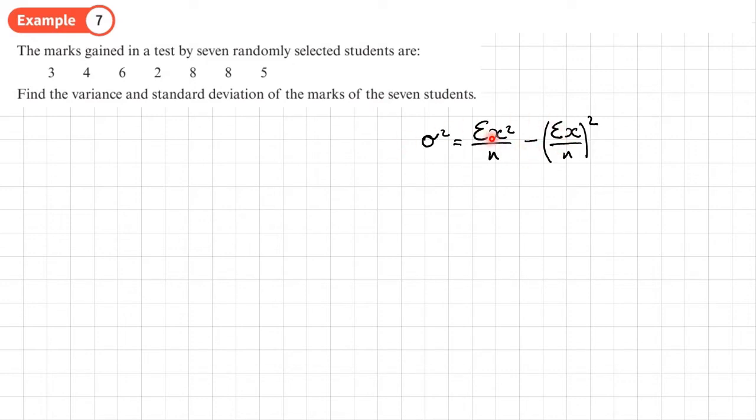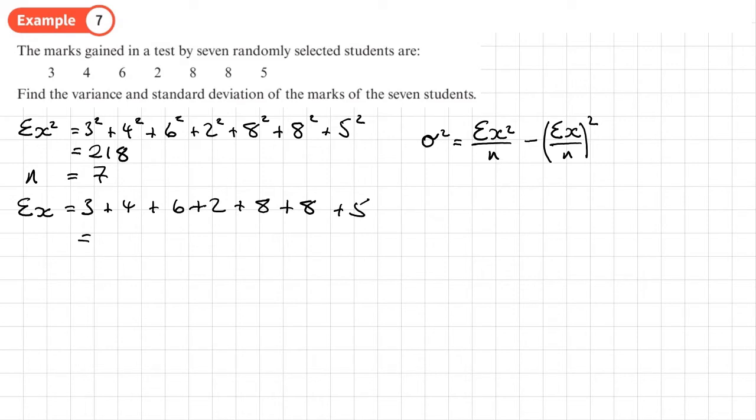Here's our formula. We need to work out different parts. The sum of the numbers squared is 3² + 4² + 6² + 2² + 8² + 8² + 5², which gives us 218. N is the number of values, 7 students, so n is 7. The sum of x is 3 + 4 + 6 + 2 + 8 + 8 + 5, which is 36.